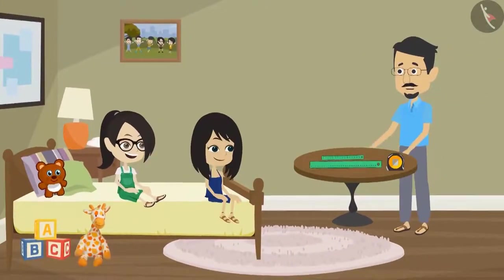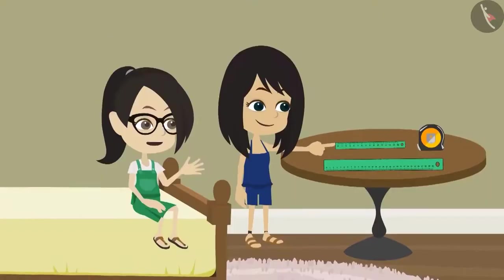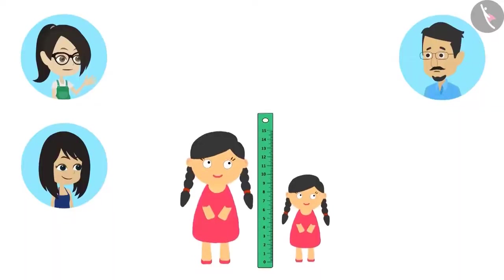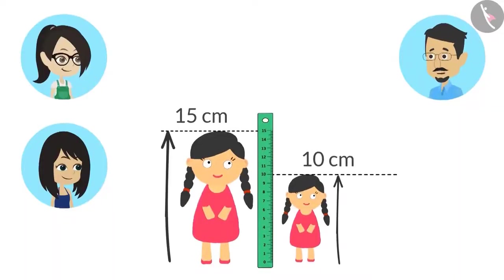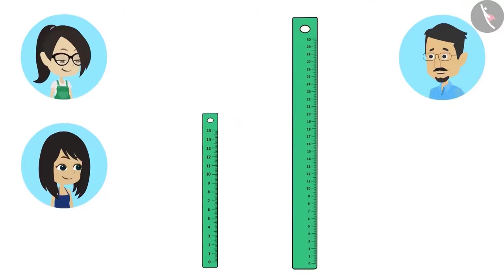Look, I have these three scales. Even we have this scale, Papa. Yes, and this is the scale we used yesterday to measure our dolls. This scale can only measure objects which are up to 15 centimeters in length. Now look at this scale and tell me — objects of what length can be measured using this scale?